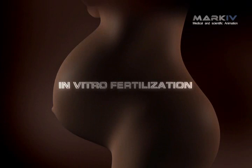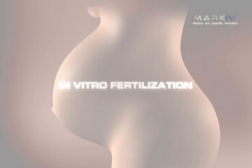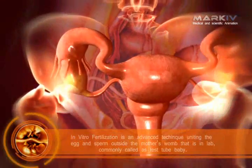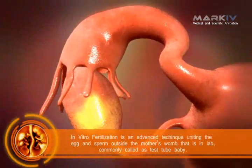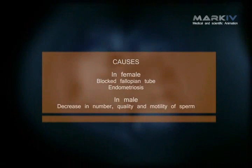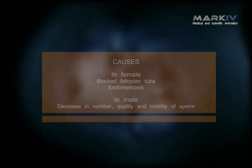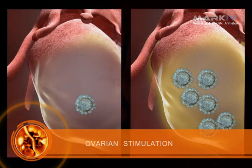In vitro fertilization is an advanced technique of uniting the egg and the sperm outside the mother's womb — that is, in the lab — commonly called a test tube baby. The main causes of in vitro fertilization include blocked fallopian tubes, endometriosis in females, and a decrease in the number, quality, and motility of sperm in males.